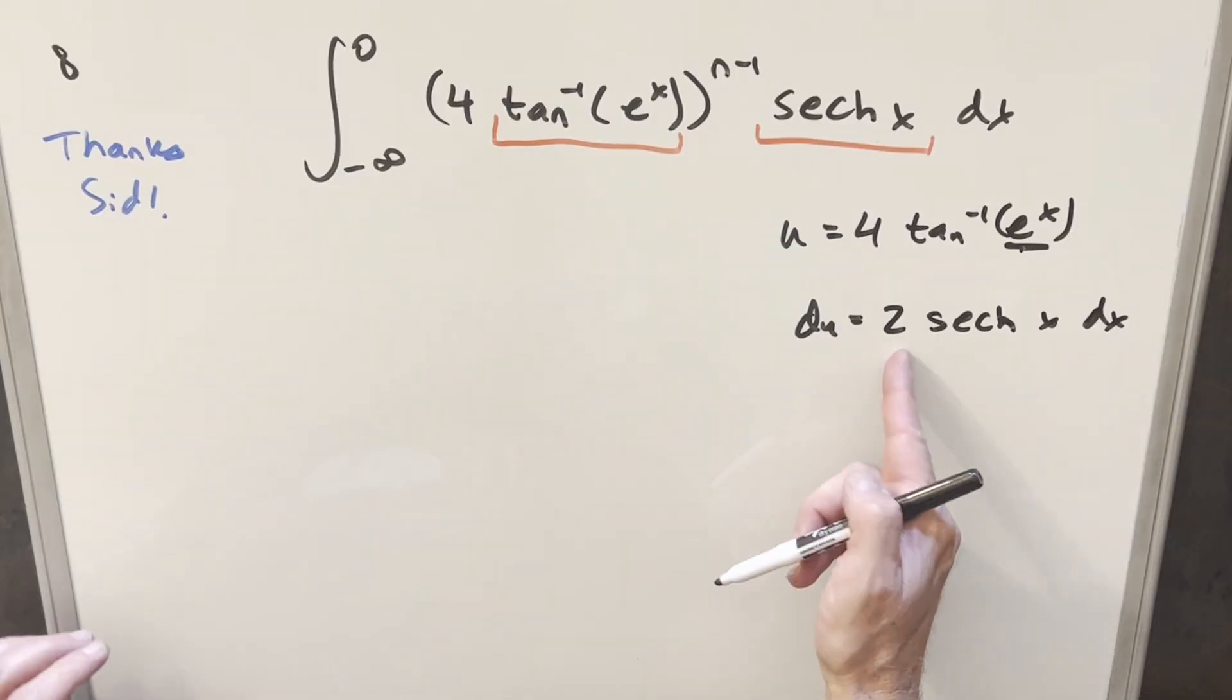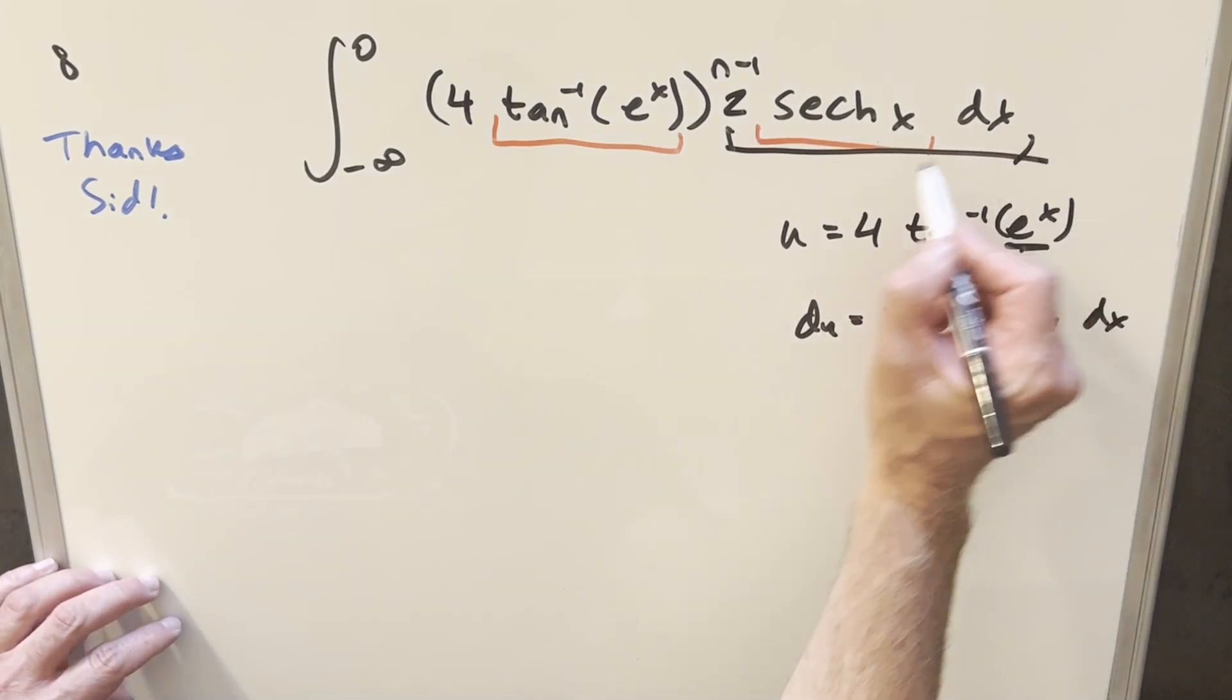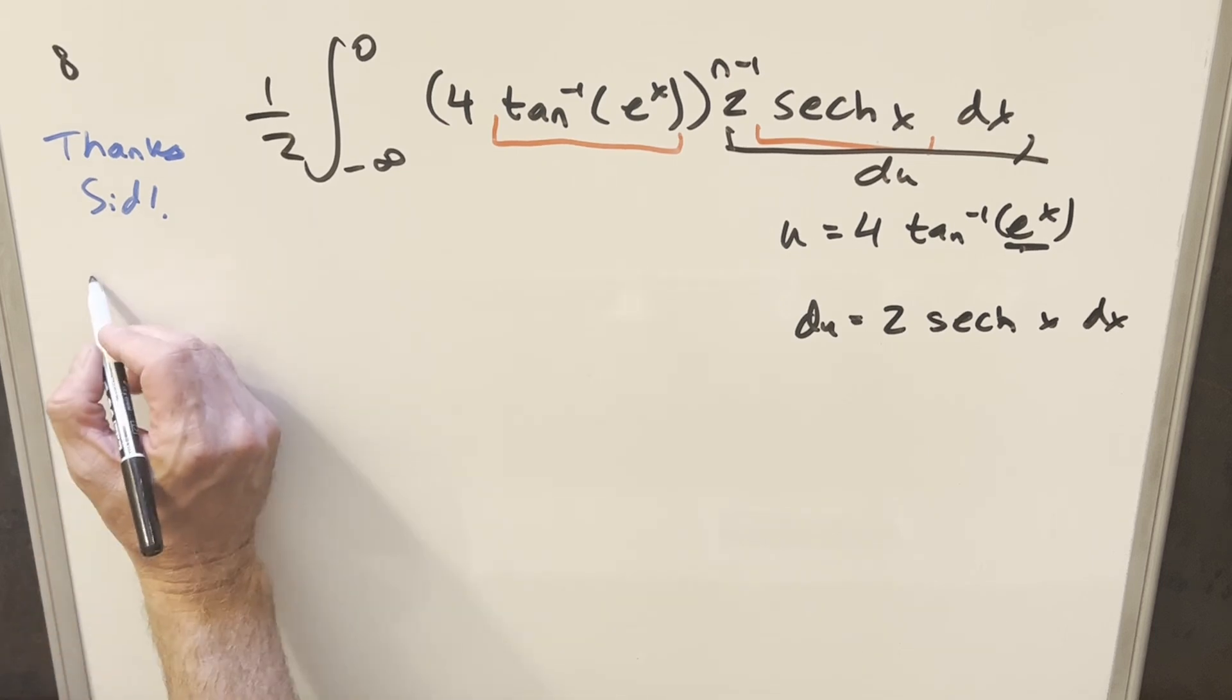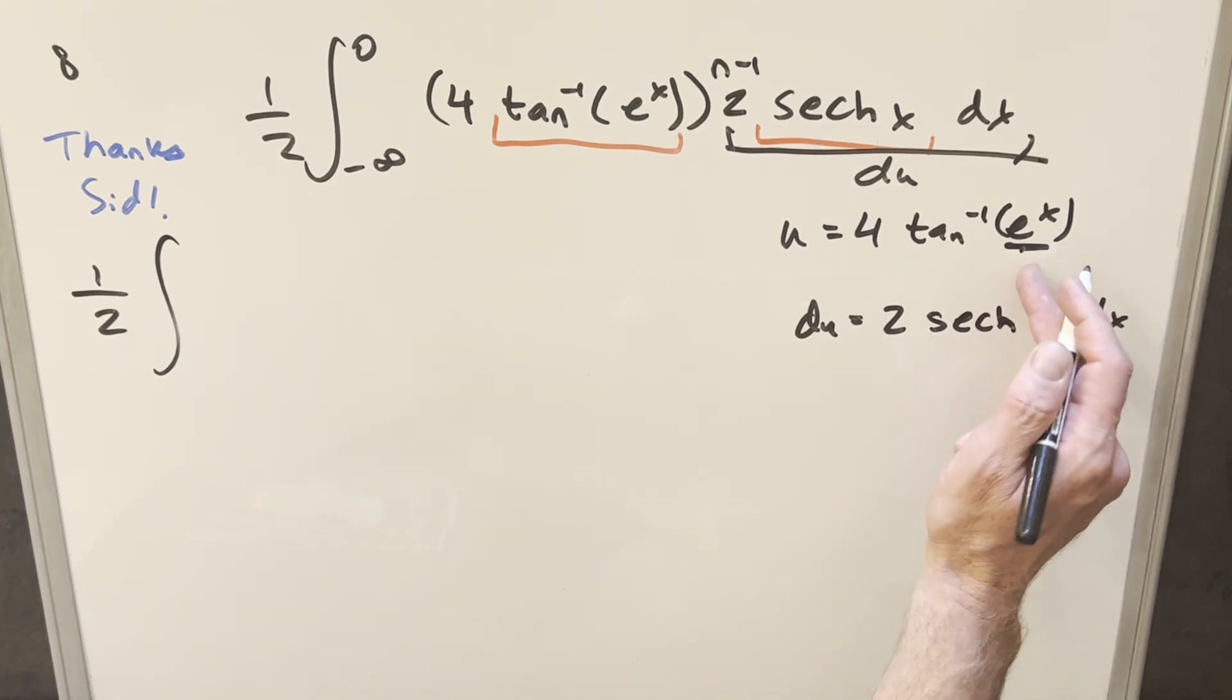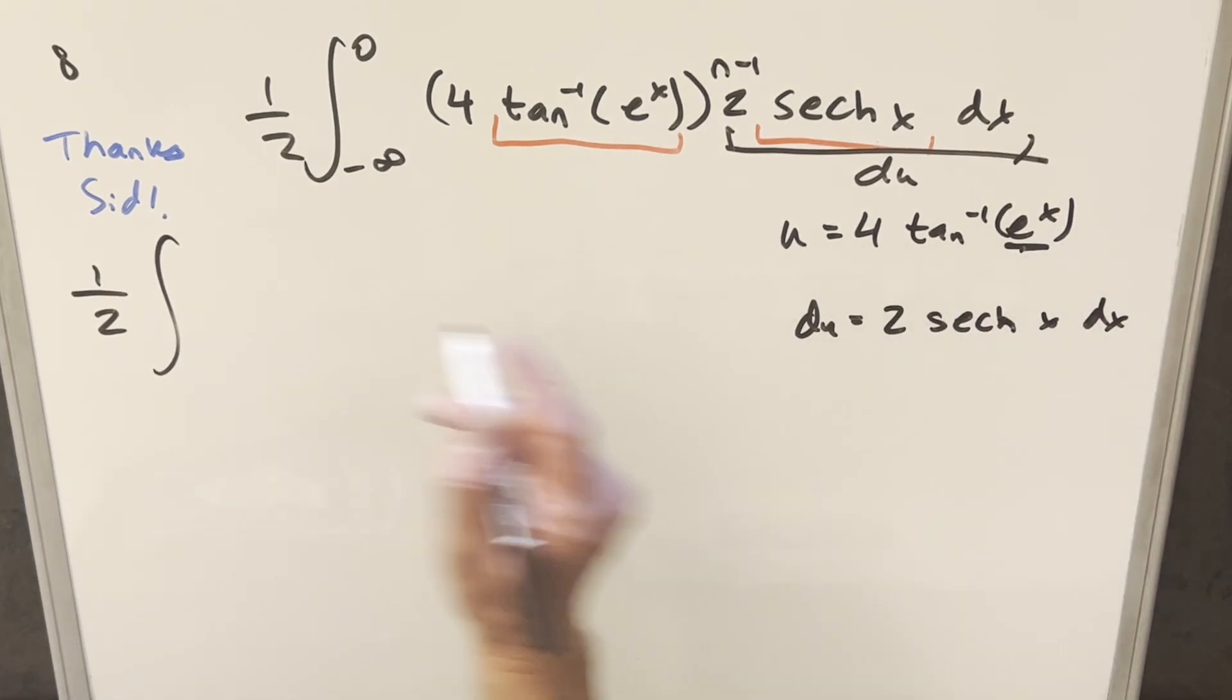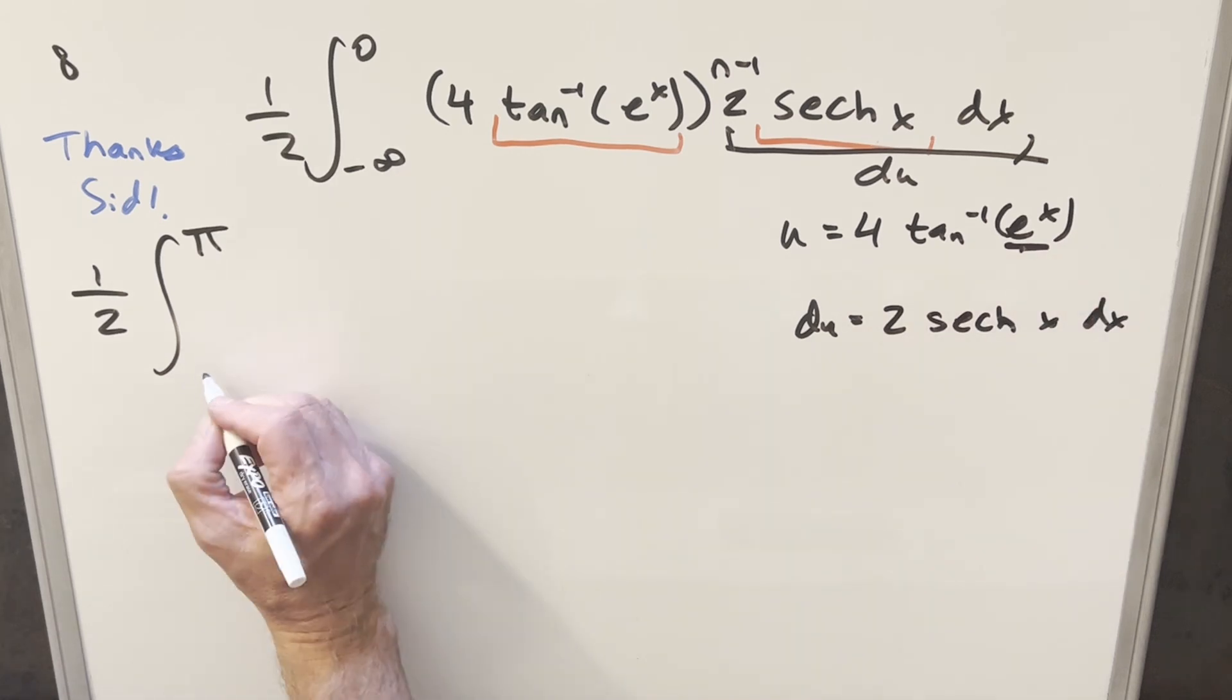Before I substitute, let's just multiply in the two right here. All this is going to be our du. I don't want to change it so let's multiply by one half in front. Now updating our bounds: when we plug in zero here, e to the zero is just one. Arctan of one is pi over four times four, so we just have pi for the upper bound. Plug in minus infinity here, e to the minus infinity is going to zero. Arctan of zero is just zero.